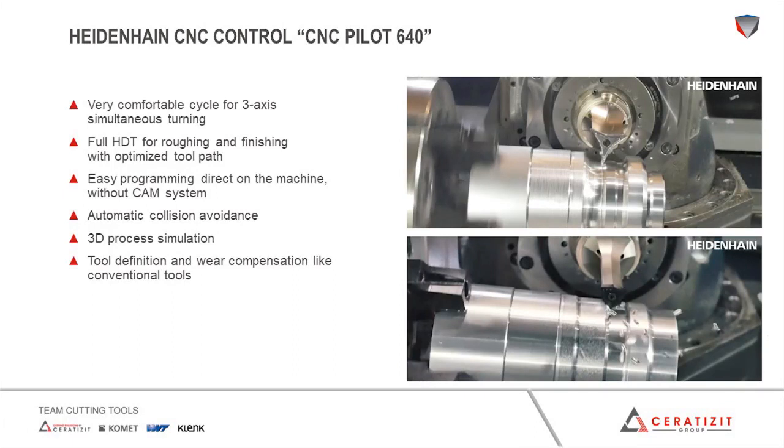A new possibility to work with the machine cycle was recently introduced by Heidenhain with its CNC Pilot 640. The cycle is very easy and offers full high-dynamic turning for roughing and finishing. Programming is done directly on the machine control in the well-known Heidenhain programming environment — for the machine operator, there is no difference between programming free turn or conventional turning. The control also offers automatic collision avoidance and a 3D simulation of the turning process.